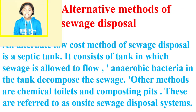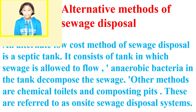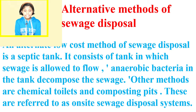Alternative methods of sewage disposal. An alternate low-cost method of sewage disposal is a septic tank. It consists of a tank in which sewage flows and anaerobic bacteria decompose the sewage. Other methods are chemical toilets and composting pits, referred to as on-site sewage disposal systems.